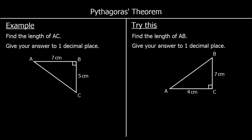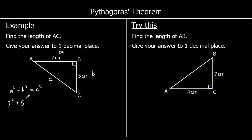This time we're doing the same thing but we're going to use a calculator to work out our answers. Find the length of AC. Again, we're finding the longest side in a right angled triangle, so we're going to use Pythagoras. A squared plus b squared equals c squared — the two shortest sides are a and b, and the longest side is c.